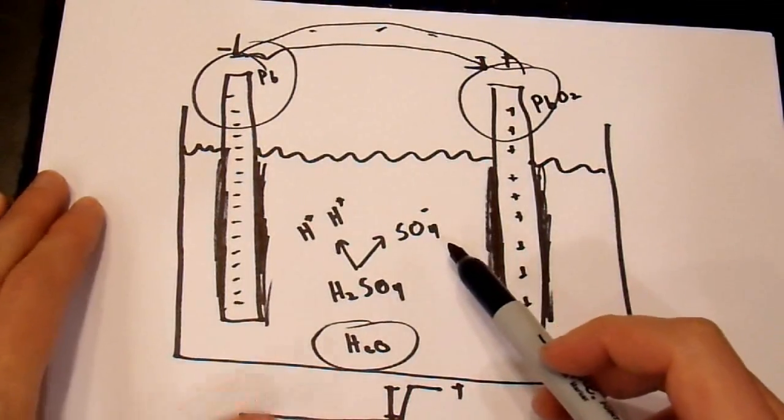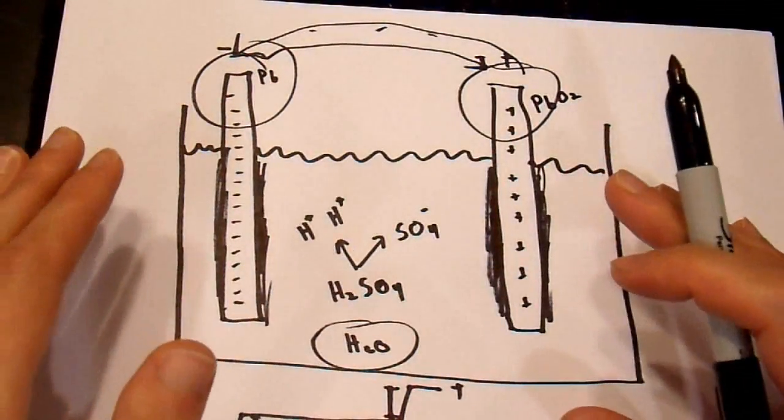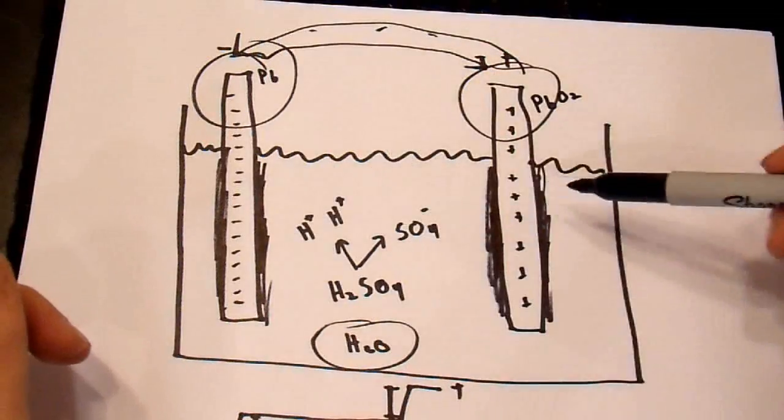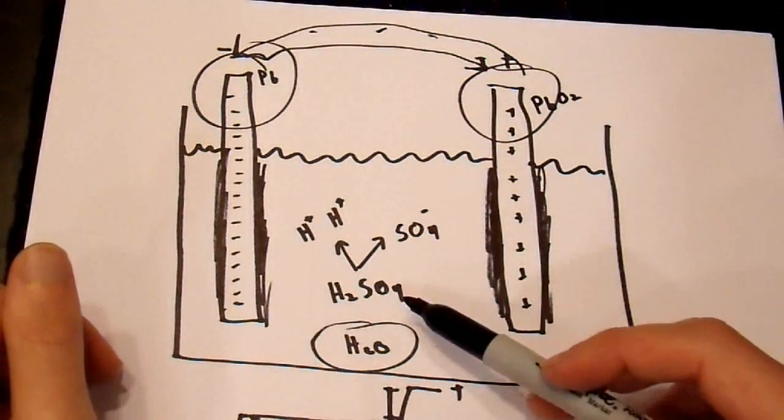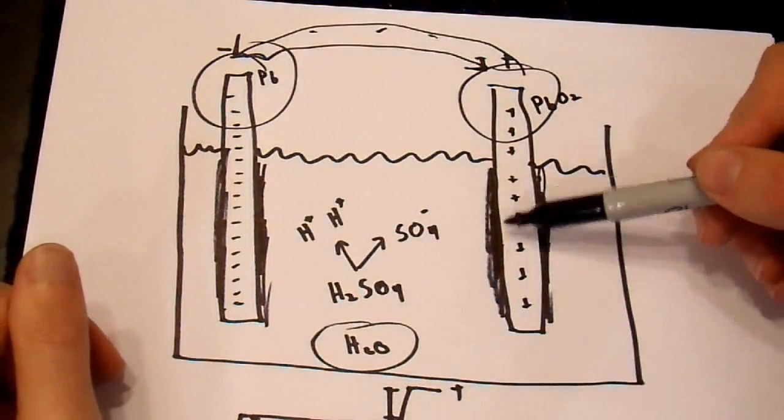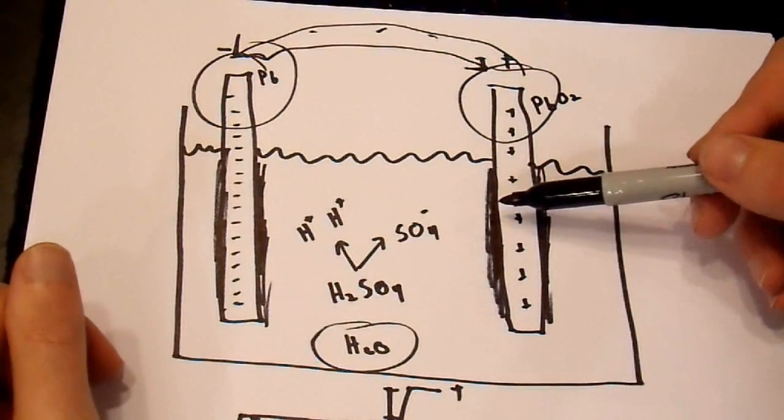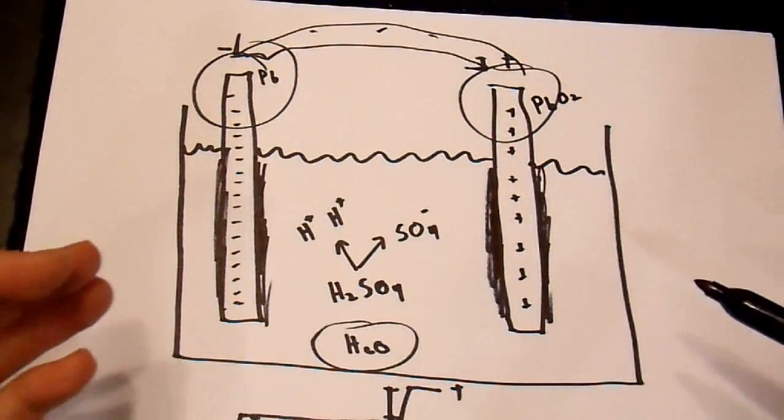Because, when this acid is very strong, there's all kinds of ions floating around. And, these reactions can happen very, very easily. When this acid is dilute, and these are covered with sulfate, covering up the active material. And, specifically, if the battery is cold, slowing down chemical reactions. These reactions don't happen very easily.